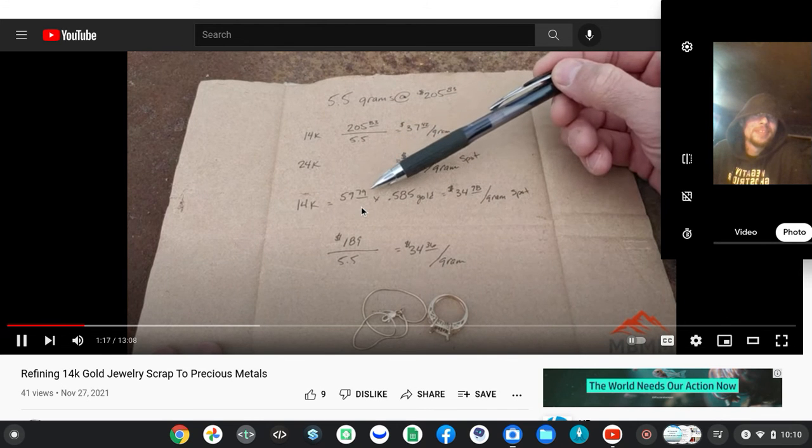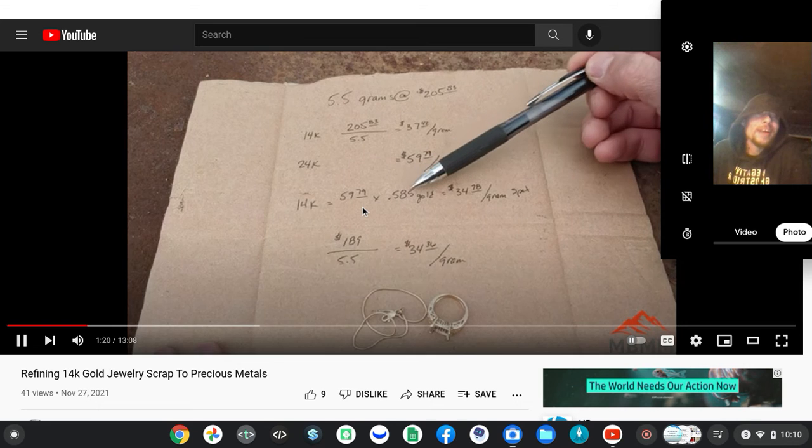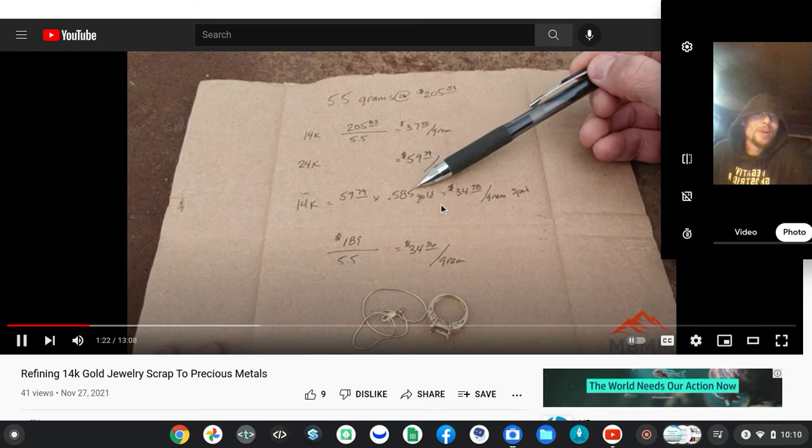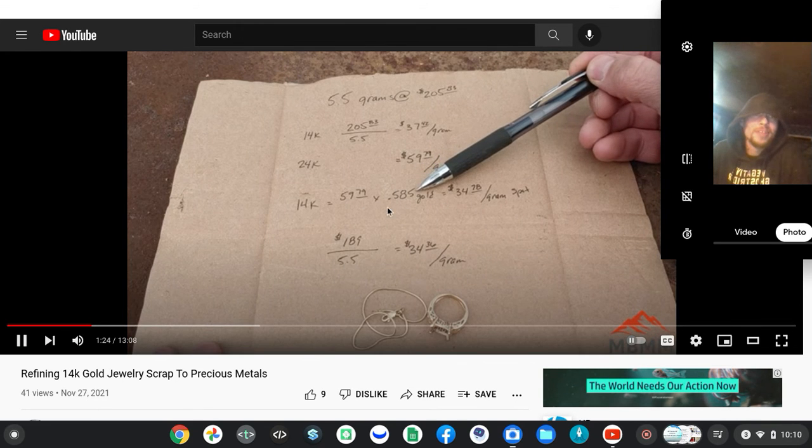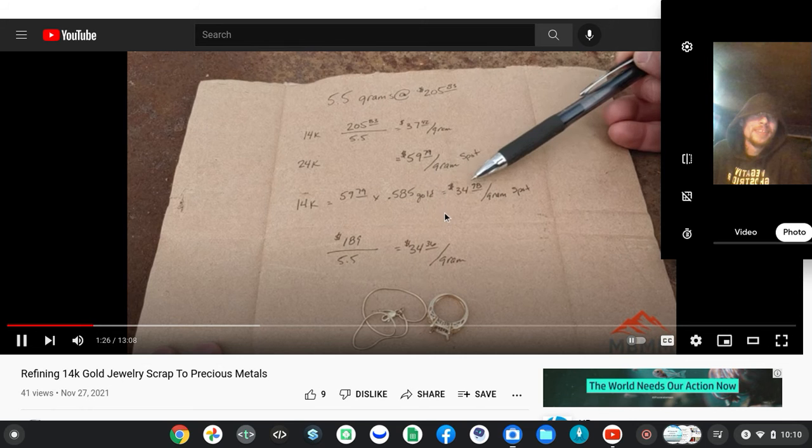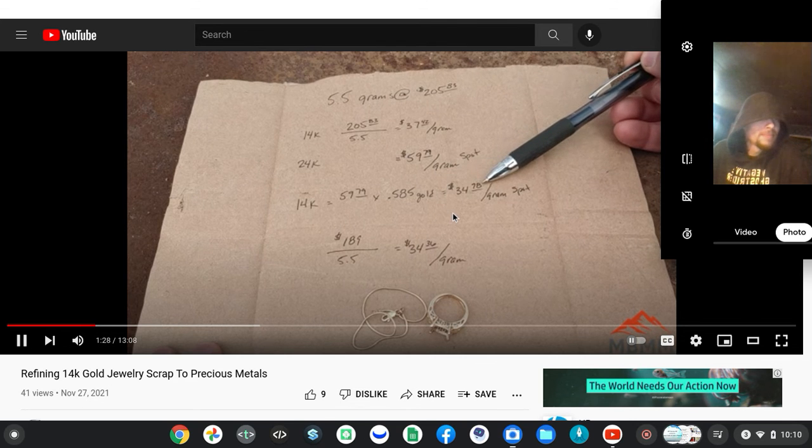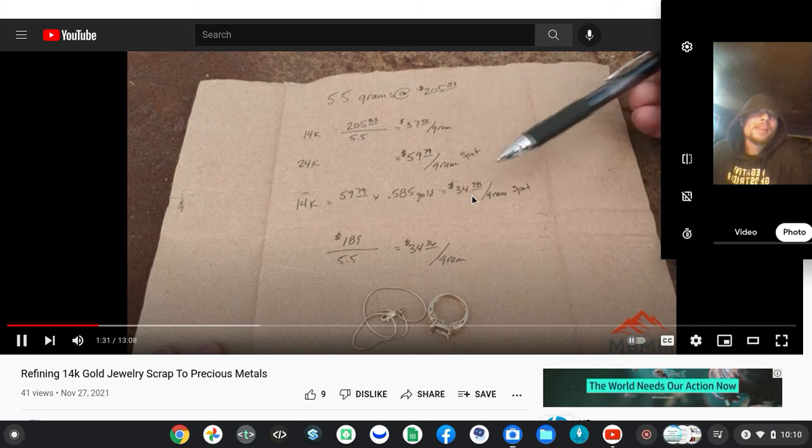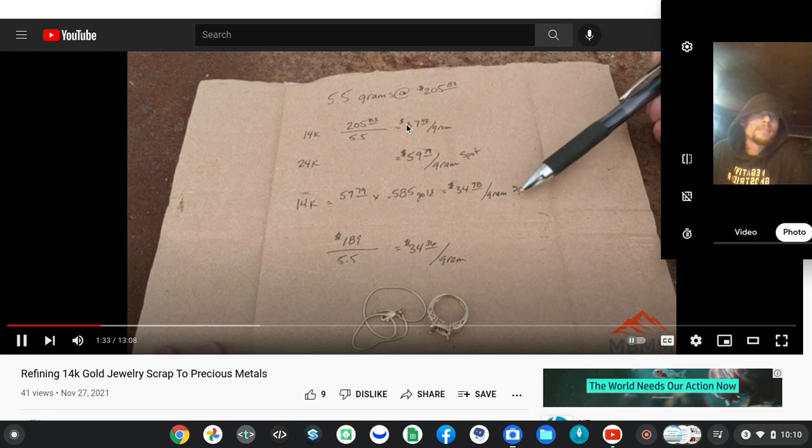14 karat gold, spot price of pure gold. Not factoring acid or crucible time or anything, this is just General Bernoulli. 14 karat gold is $34.98 per gram of gold spot price, if that makes sense.